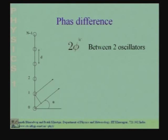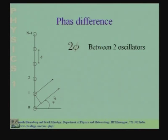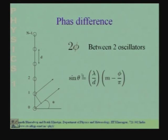We also considered the situation where you put a phase difference between 2 consecutive oscillators. If the phase difference is 2φ, then in addition to the phase due to path difference, you also have to add this term. What it does is shift the angle corresponding to the maxima. The shifted angle satisfies a modified condition that now includes a term involving φ.